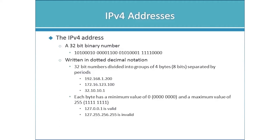Each group of eight bits is referred to as an octet, so you'll hear me say 'in the first octet,' 'in the second octet,' and so on. When we dig in further, we need to understand that the IPv4 address is actually comprised of two parts: the network ID and the host ID — similar to the house number and street name.